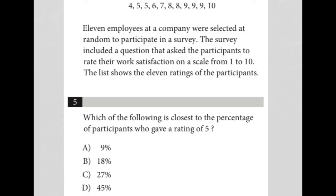This question starts off by giving us a list of numbers. Let's see what this list represents. The information before the question says 11 employees at a company were selected at random to participate in a survey. The survey included a question that asked the participants to rate their work satisfaction on a scale from 1 to 10. The list shows the 11 ratings of the participants. So we have 11 ratings on a scale of 1 to 10.